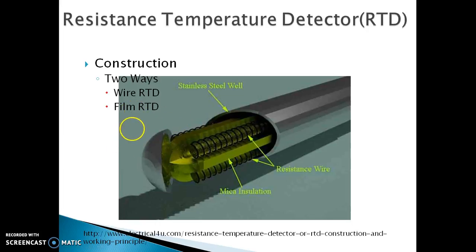This is the classical RTD which was proposed by C.H. Hare in 1932. It has a helical coil of platinum wound on a crossed mica base. The mica is used for electrical insulation.